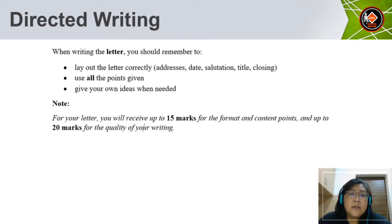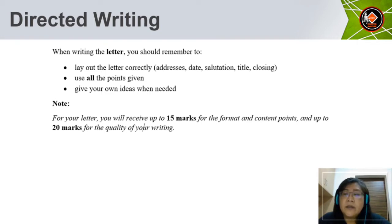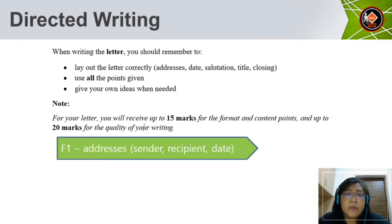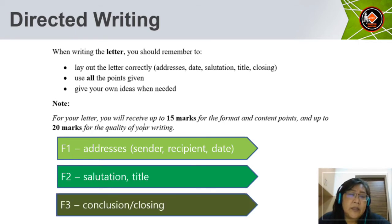When writing the letter, you should remember to lay out the letter correctly: addresses, date, salutation, title, and closing. Use all the points given and give your own ideas when needed. For your letter, you will receive up to 15 marks for the format and content points, and up to 20 marks for the quality of your writing. Format 1 will be addresses — sender's address, recipient's address and also the date. F2 will be the salutation and the title, and F3 will be the conclusion or closing.